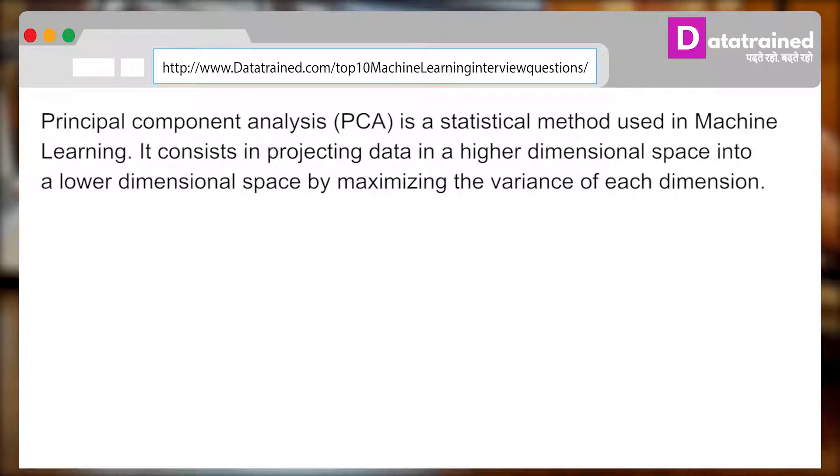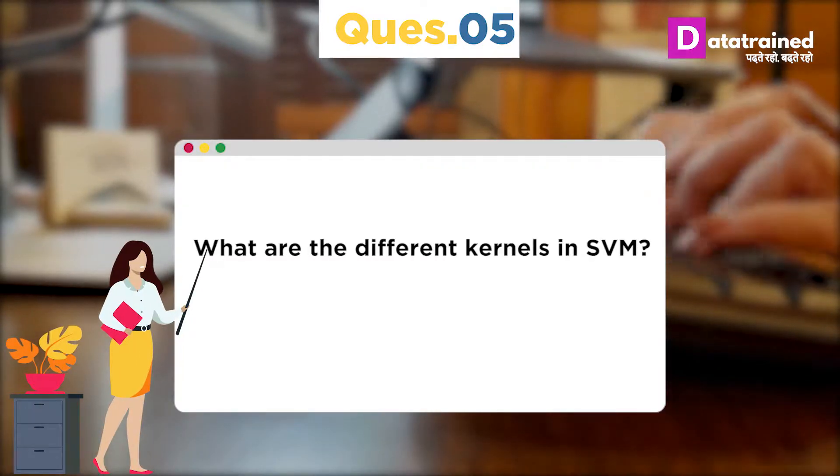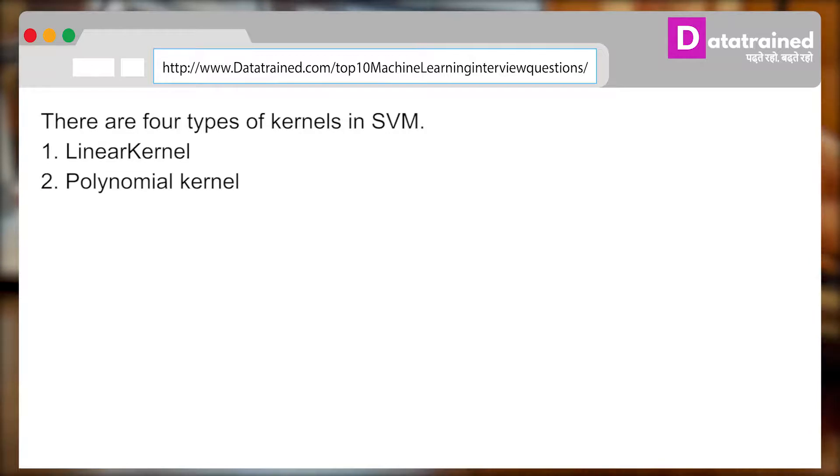Now, you can be asked: What are the different kernels in SVM? And you can answer: There are four types of kernels in SVM. Linear kernel, polynomial kernel, radial basis kernel and sigmoid kernel.